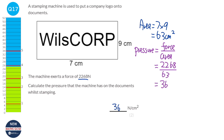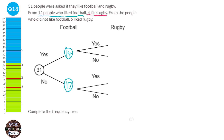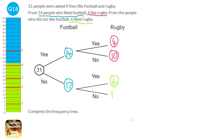We're told 14 people liked football, so we fill in 14 here. We started with 31, so if 14 liked football then 17 must not have liked it. Of the 14 who liked football, 4 liked rugby, so 10 did not like rugby. Of the 17 who didn't like football, 6 liked rugby, which means 11 did not like rugby.